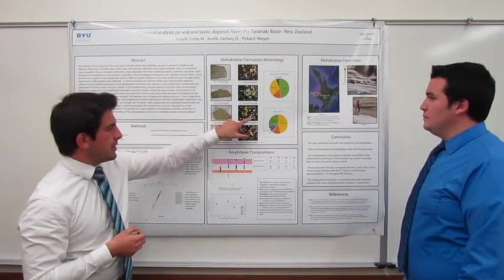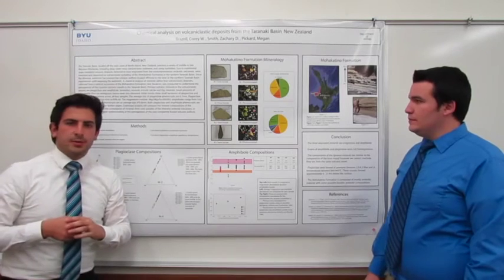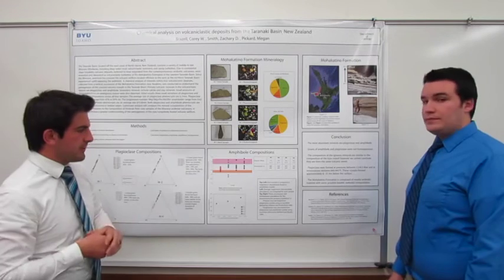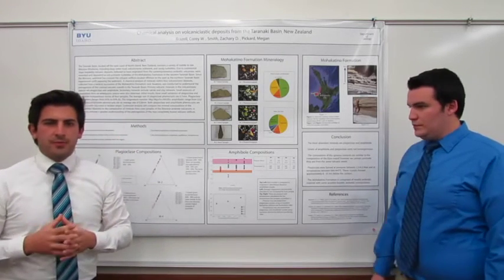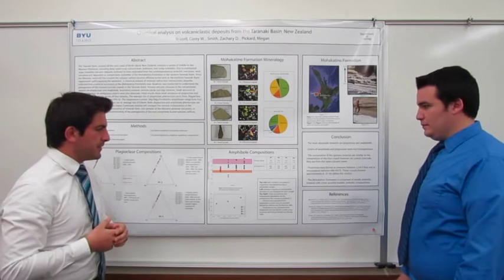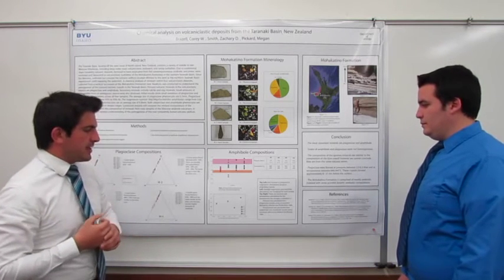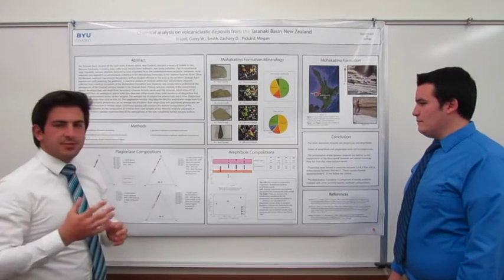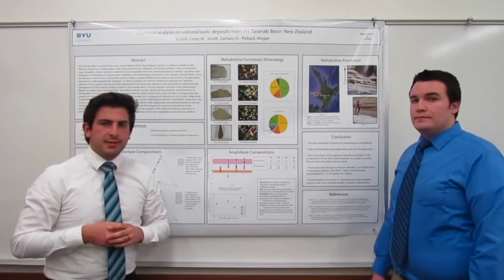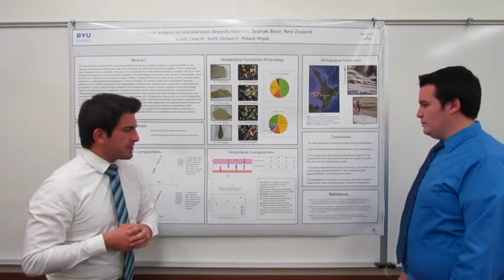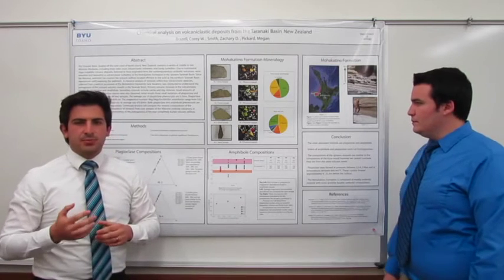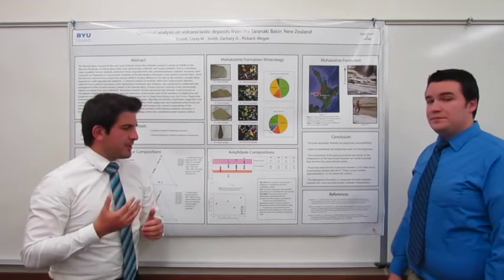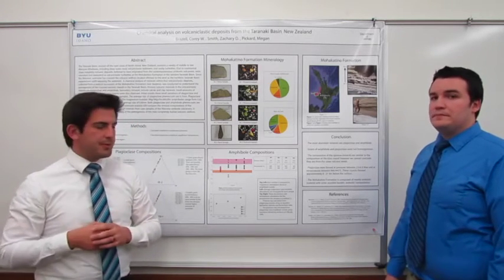We examined our M3 thin section looking for alteration in the plagioclase, but we didn't really see any. We took things a few steps further and wanted to see the kind of environment these minerals may have formed in, using the equation by Johnson and Rutherford (1989). Using anorthite within plagioclase, we found that the average pressure was around 2.3 to 6.3 kilobars, which corresponds to approximately 8 to 21 kilometers below the surface.